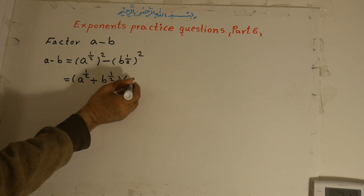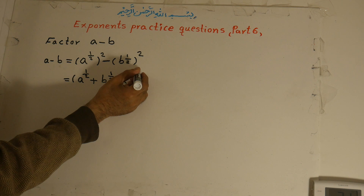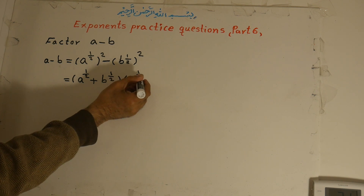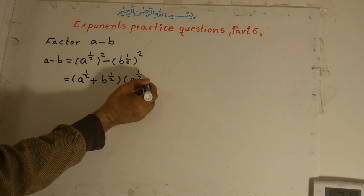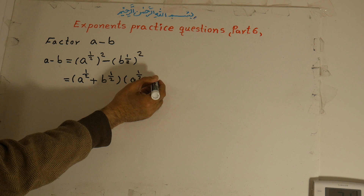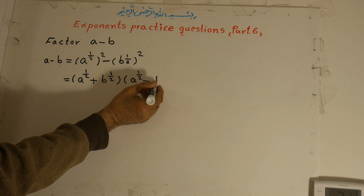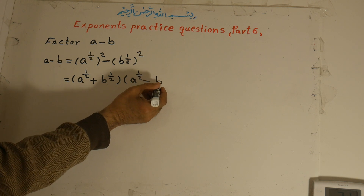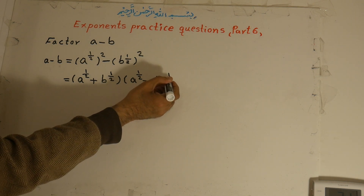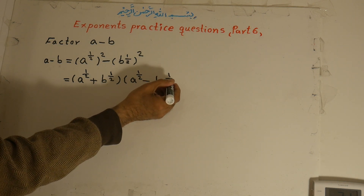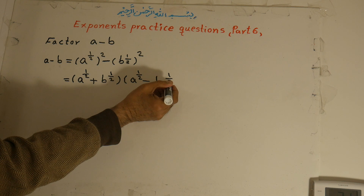And the second factor is a to the power of one-half, minus b to the power of one-half.